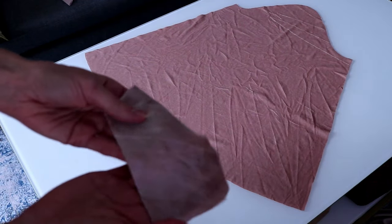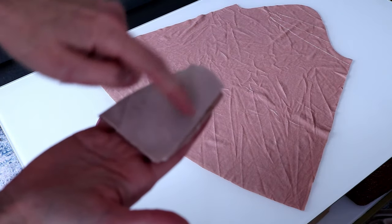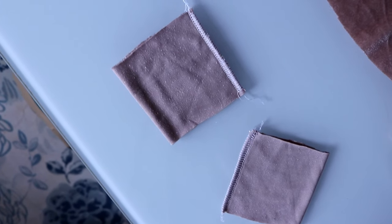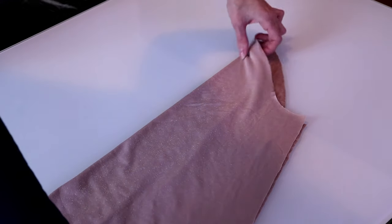Time for the sleeves. With right sides together sew the cuffs along the sides. Now stitch the sleeve underarm seams.